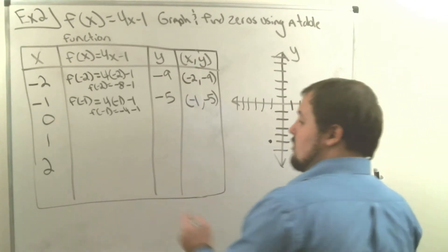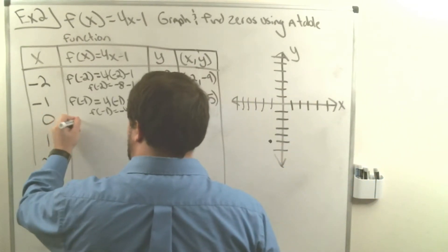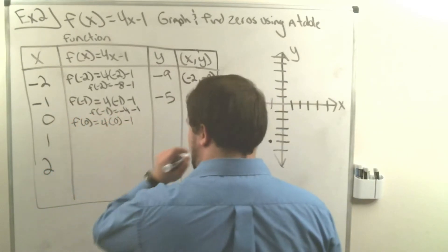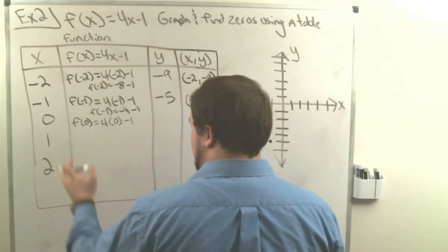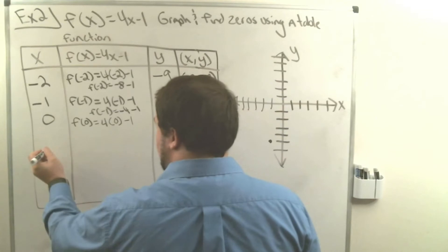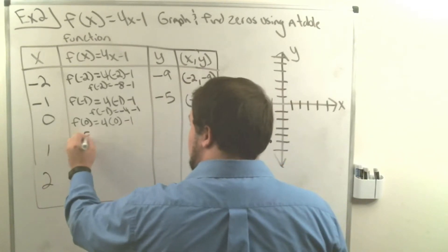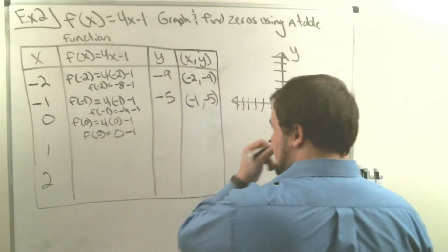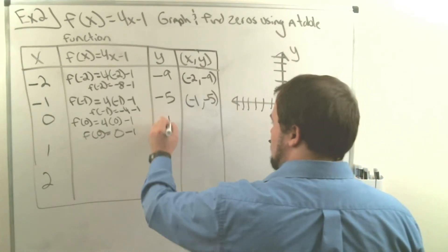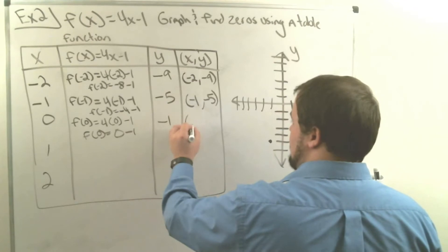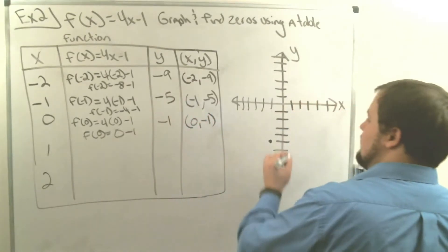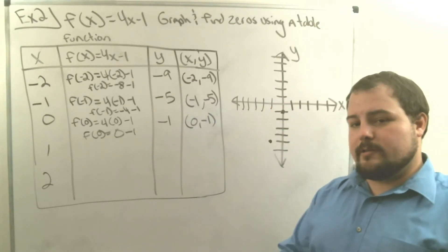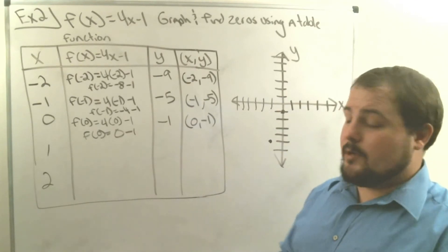Now let's do 0. The function of 0 equals 4 times 0 minus 1. Four times 0 is 0, so we have 0 minus 1, which is negative 1. Our coordinate pair is 0, negative 1. We go to 0 on the x-axis, go down to negative 1 on the y-axis, and put a dot. We've now got two points and we're almost ready to make our line.